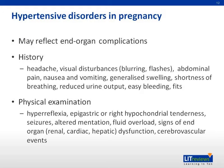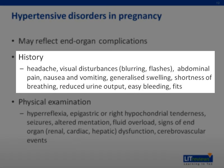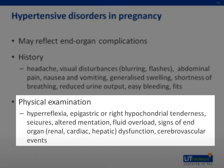Clinical features of hypertensive disorders in pregnancy may reflect end-organ complications. The patient may present with complaints of headache, visual disturbances such as blurring or flashes of light, abdominal pain, nausea and vomiting, generalized swelling, breathing difficulties, oliguria, easy bleeding, and even fitting episodes. On examination, the patient may have features of hyperreflexia, epigastric or right hypochondrial tenderness, seizures, altered mentation, fluid overload, signs of end-organ dysfunction, and cerebrovascular events.